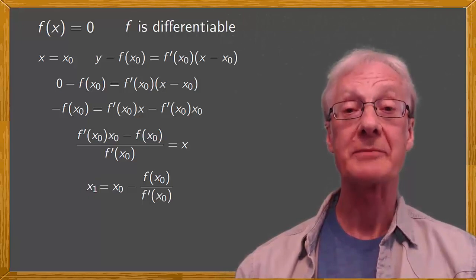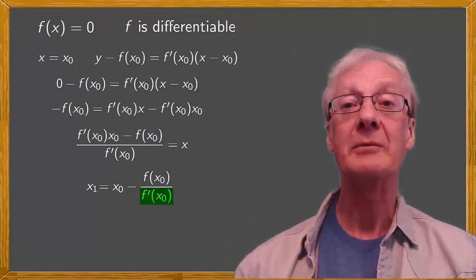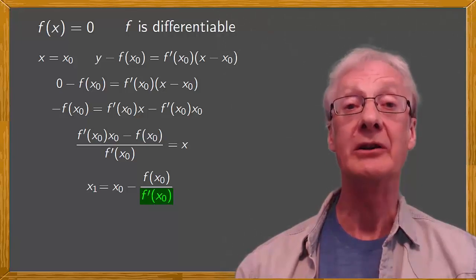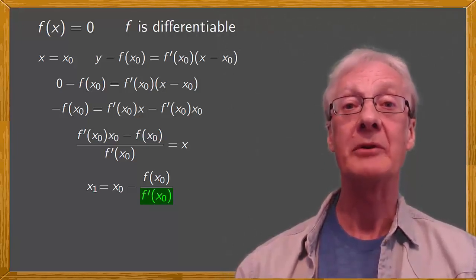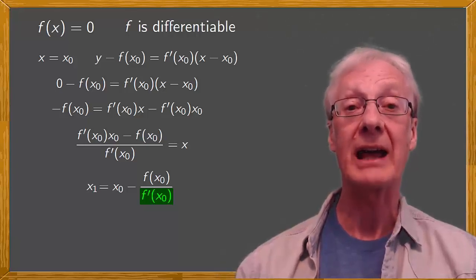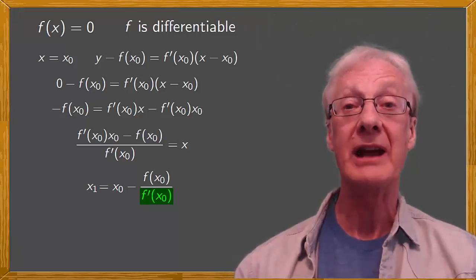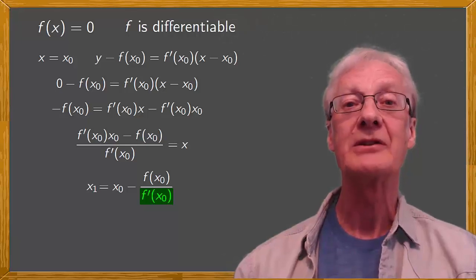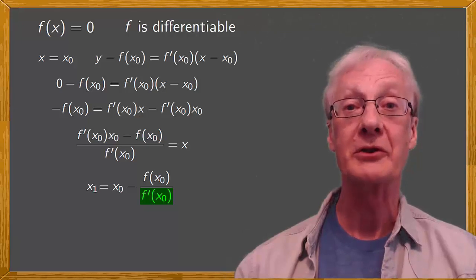The first thing to notice about this equation for x1 is that f prime of x0 appears in the denominator, so it can't be 0. If f prime of x0 were 0, the tangent line to the graph of f of x when x equals x0 would be horizontal, in which case it would never cut the x-axis. So we definitely want to choose a starting value x0 for which the derivative is non-zero.